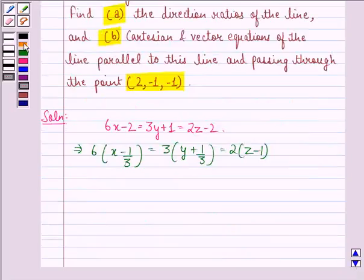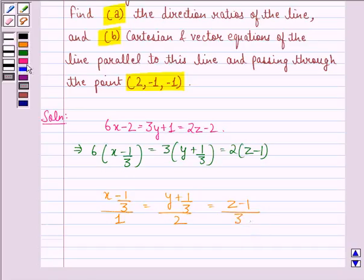Dividing by 6, we get (x minus 1/3) divided by 1 equals (y plus 1/3) divided by 2 equals (z minus 1) divided by 3.